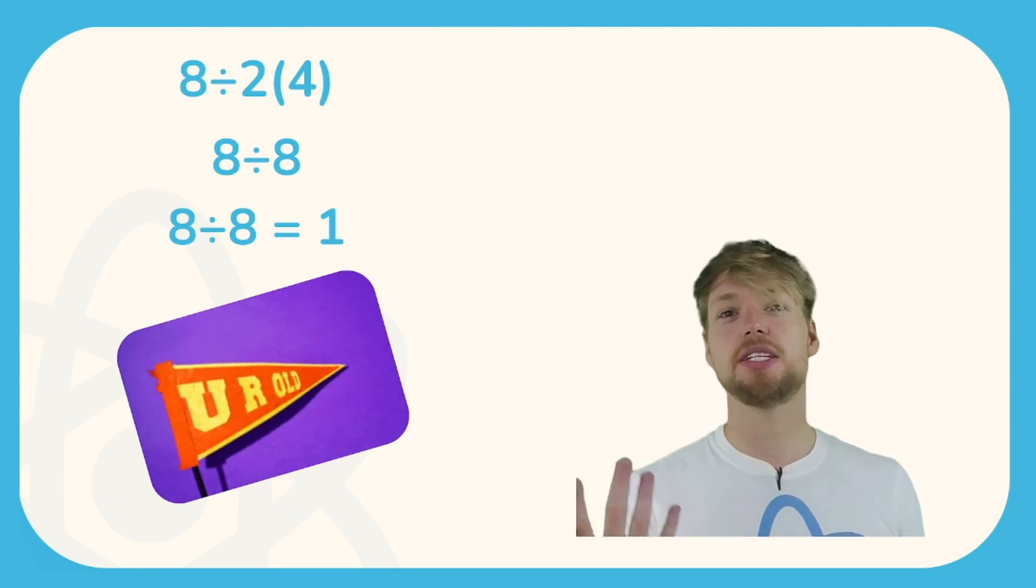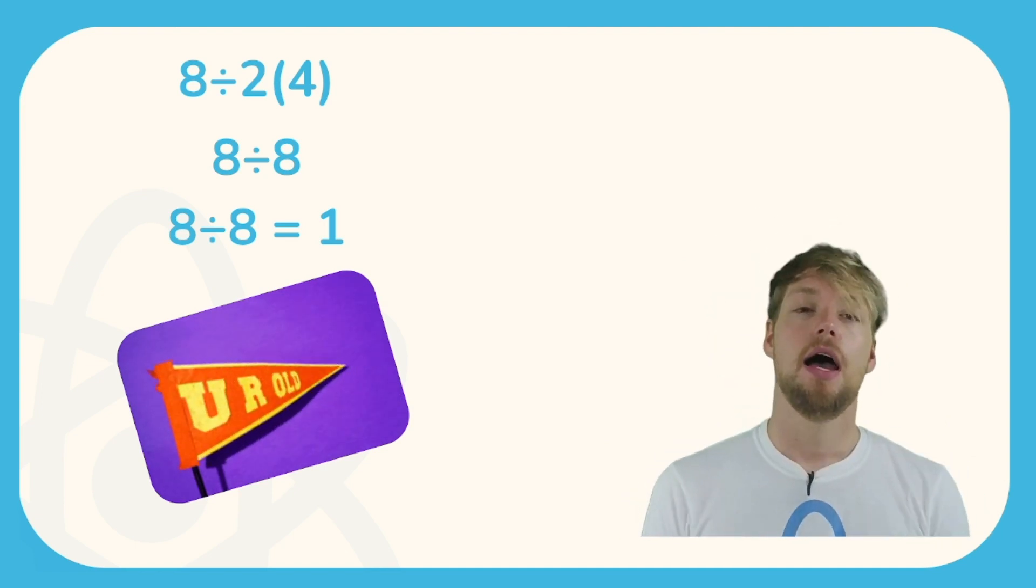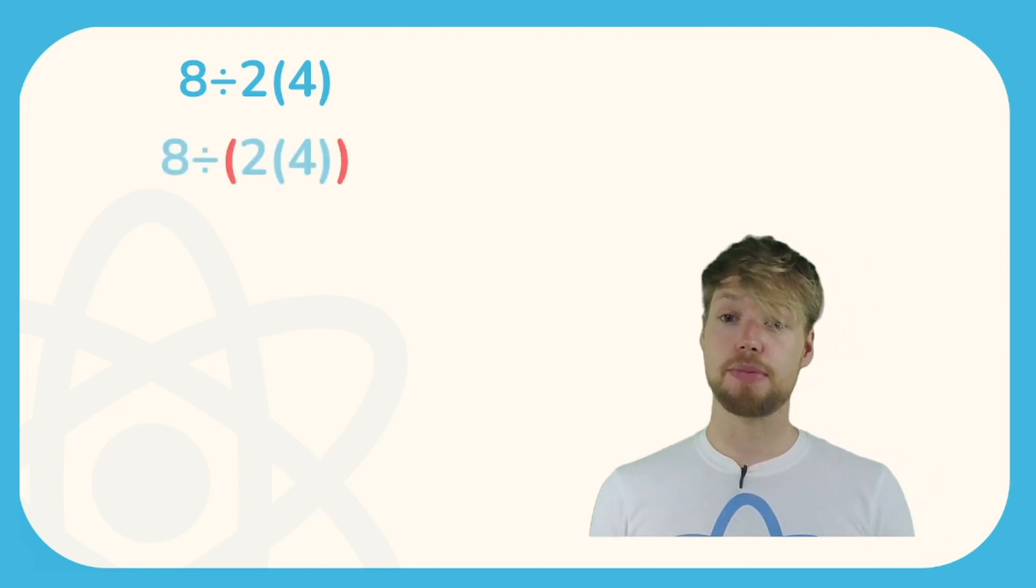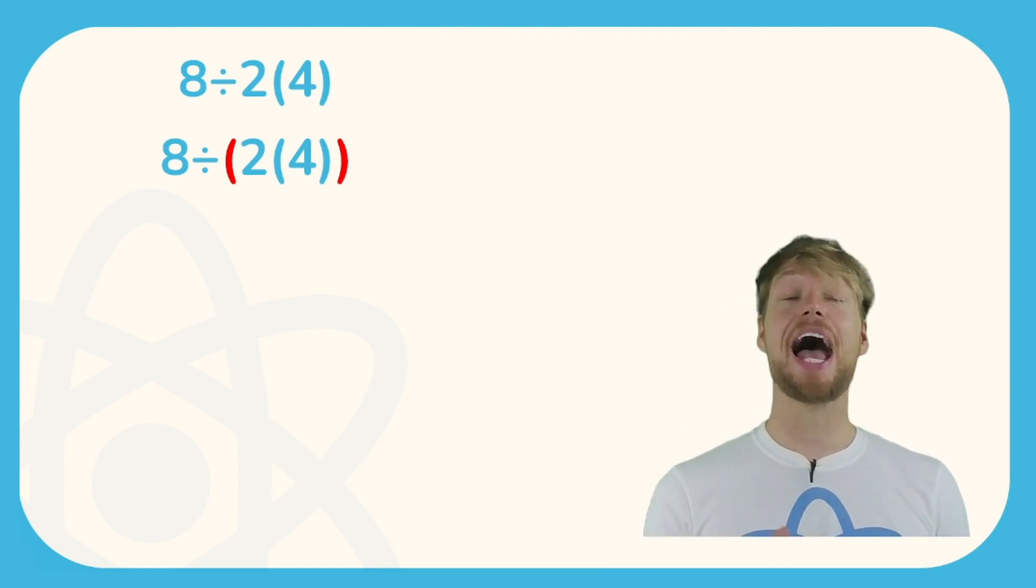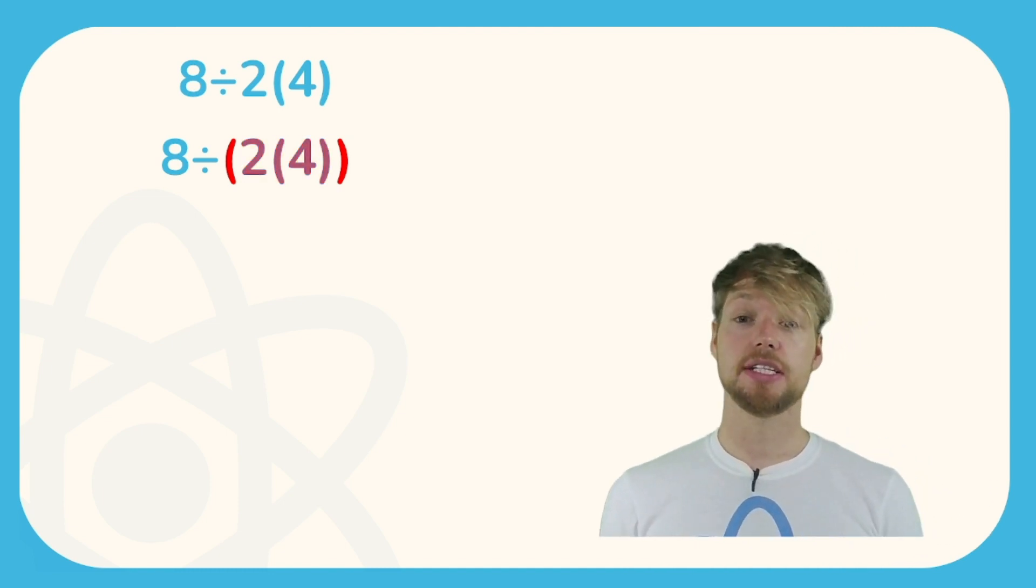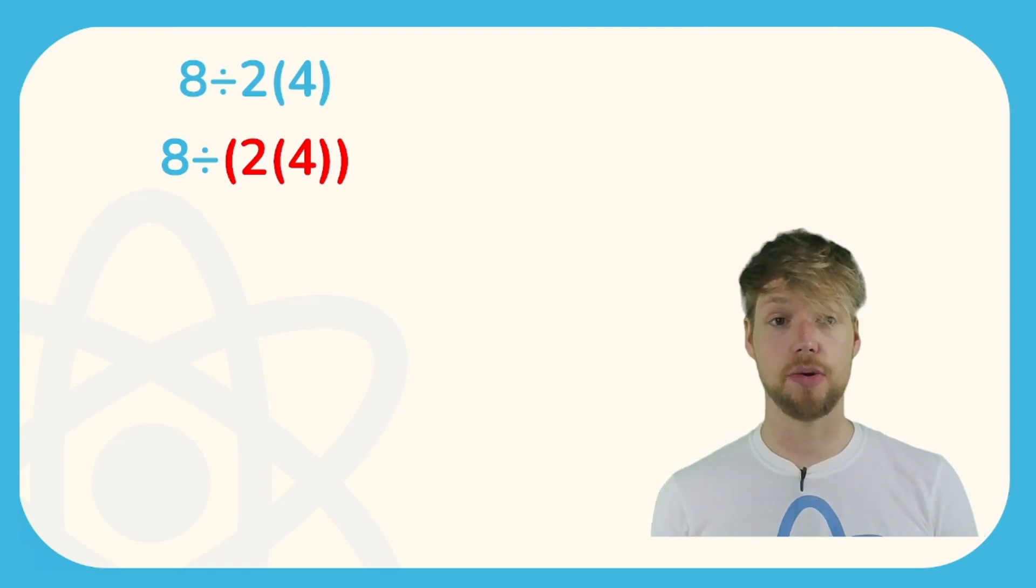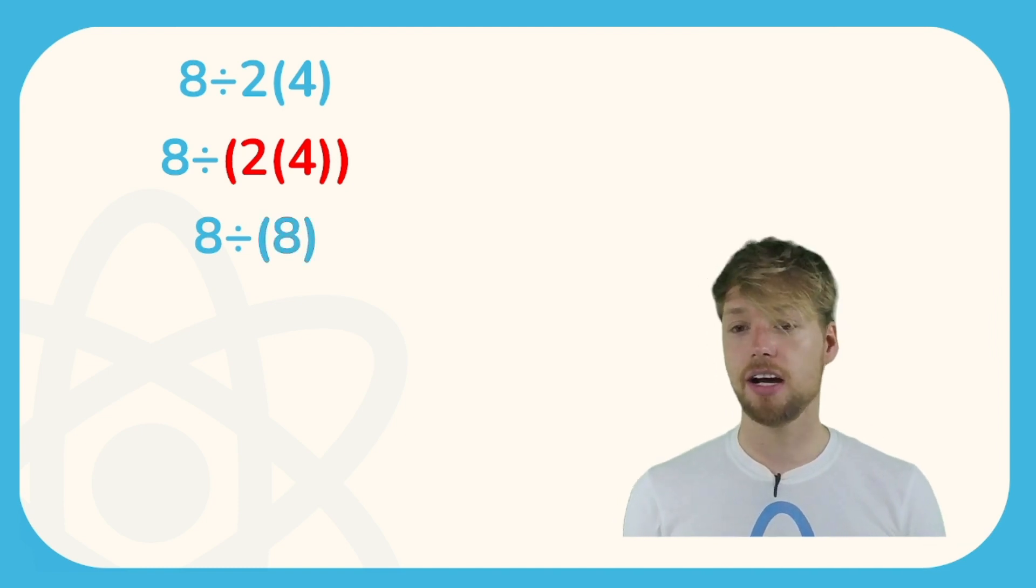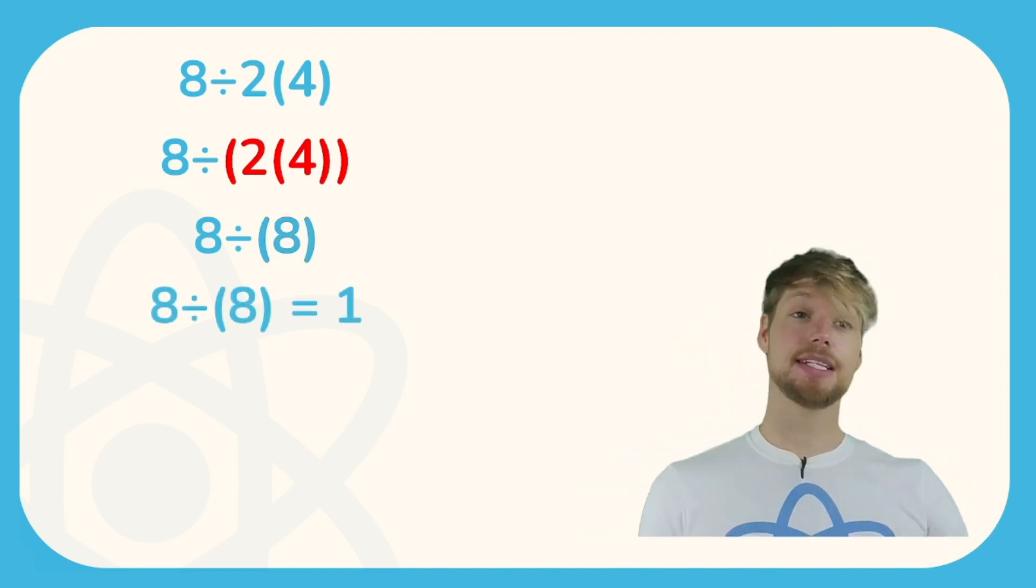Just to finish off, if we wanted to get the answer of 1 in modern math, the only way to do that would be to add an extra pair of brackets. So we would need to put a bracket around the 2 and the 4 to make sure we do that first. If we don't have a bracket around the 2, brackets, 4 just means 2 multiplied by 4. So to get the answer of 1 we would have to put all of the 2 and the 4 in brackets, and then we would do 8 divided by 8 which would give us the answer of 1.